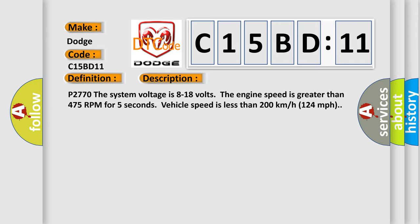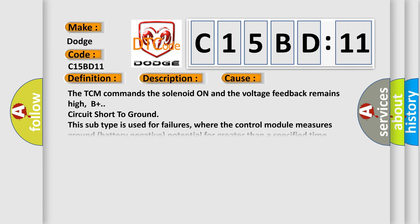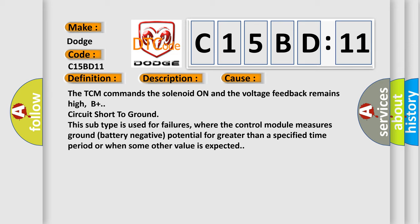This diagnostic error occurs most often in these cases: The TCM commands the solenoid on and the voltage feedback remains high. B plus circuit short to ground.